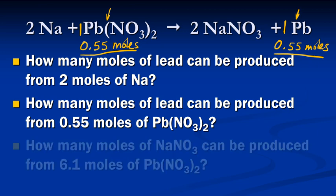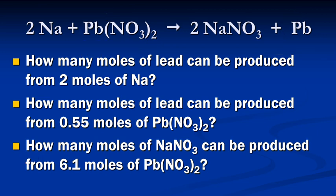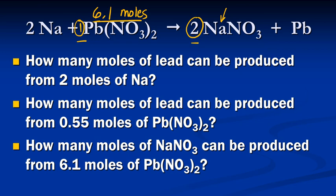Let's try one more example — this one may be a little tougher. How many moles of sodium nitrate, NaNO₃, can be produced from 6.1 moles of lead nitrate? The mole ratio is one to two. So if it's a one to two ratio and we have 6.1 moles of lead nitrate, it's going to be twice as many moles of sodium nitrate. 6.1 times two equals 12.2 moles of sodium nitrate.